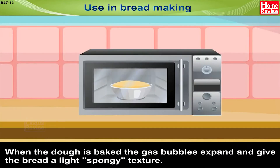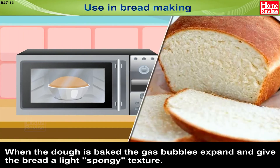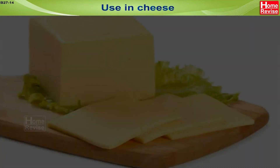The dough rises — that is called leavening — to about three times its original volume. When the dough is baked, the gas bubbles expand and give the bread a light, spongy texture.